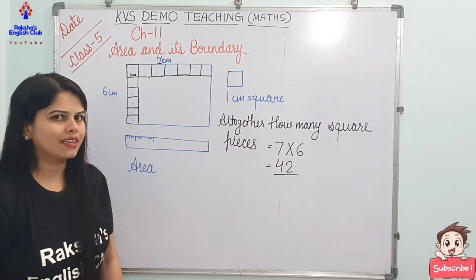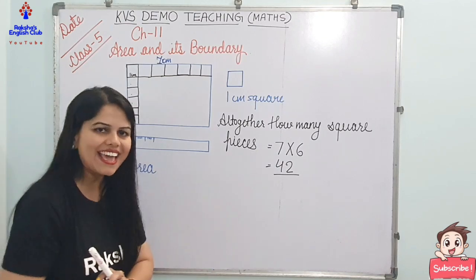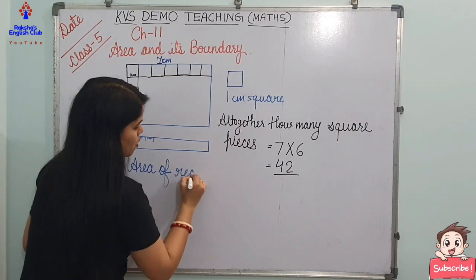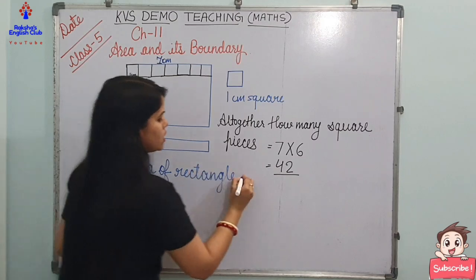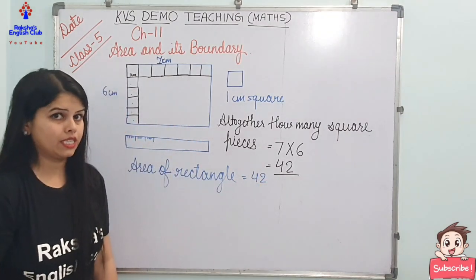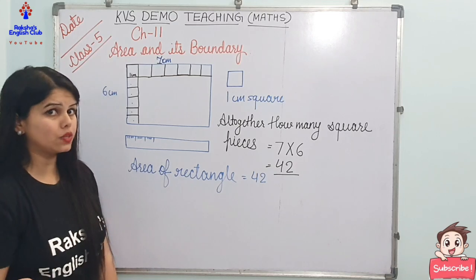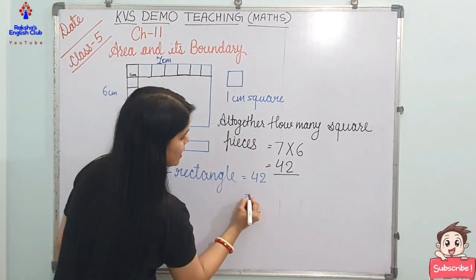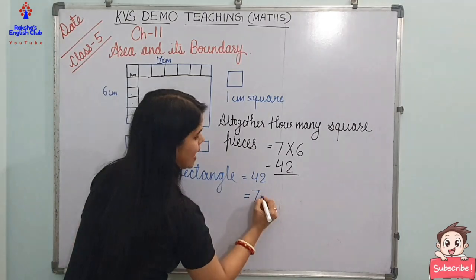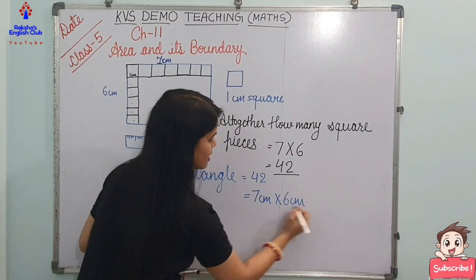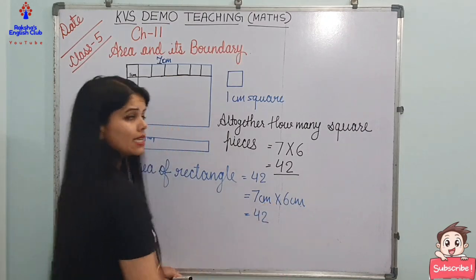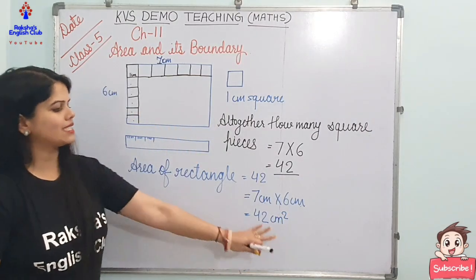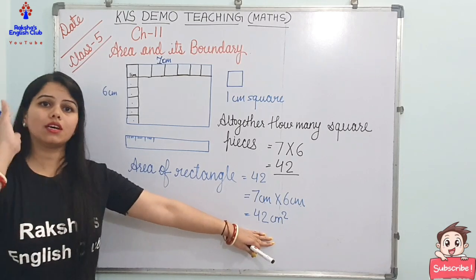And do you know the magic? This is the area of the rectangle. Area of rectangle is also 42. But we have to check the unit also. What is the unit of length here? Centimeter. So when we are multiplying for the area of rectangle, we are multiplying 7 centimeter and 6 centimeter — seven sixes are 42, and centimeter times centimeter becomes centimeter square. So the area is 42 centimeter square.